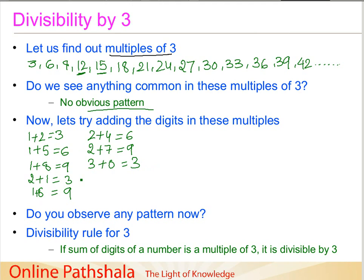Now is it possible for you to see a pattern? So what are the patterns that we see here? For 12, 15, 18 — when I sum their digits I get 3, 6, 9. Again 3, 6, 9, 3, and so on.